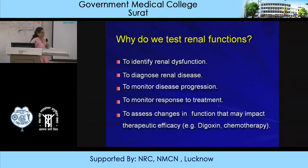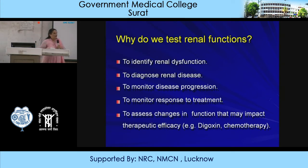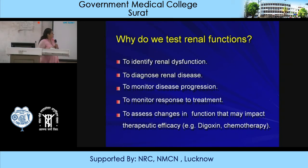In conditions like hypertensive nephropathies, glomerulonephritis, and nephrotic syndrome, the disease progresses and the renal function test changes. We can establish diagnostic criteria and monitor the response to treatment - we are giving a lot of treatment to patients and we have to see that treatments are going on properly. Is the disease progressing? Do we want to change drugs? Changes in kidney function may also impair the therapeutic efficiency of certain drugs like digoxin and certain chemotherapeutic agents.